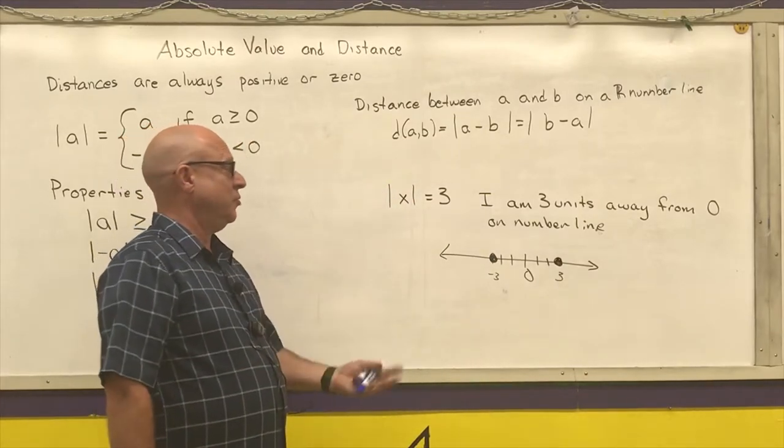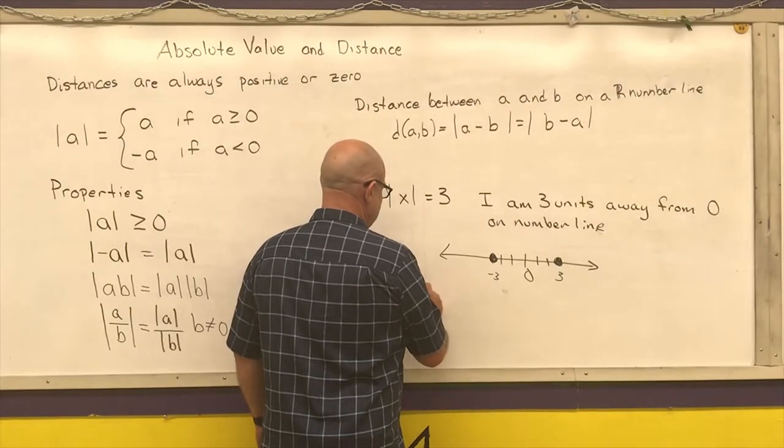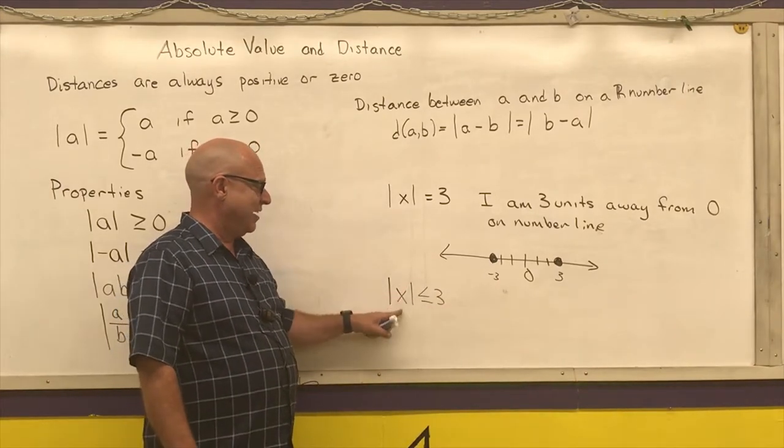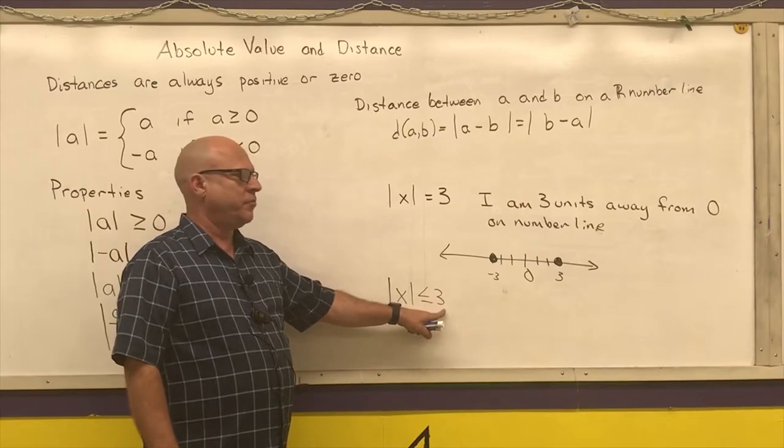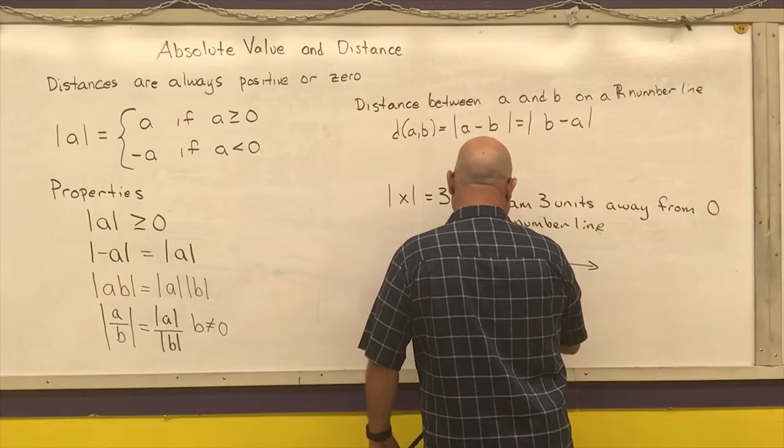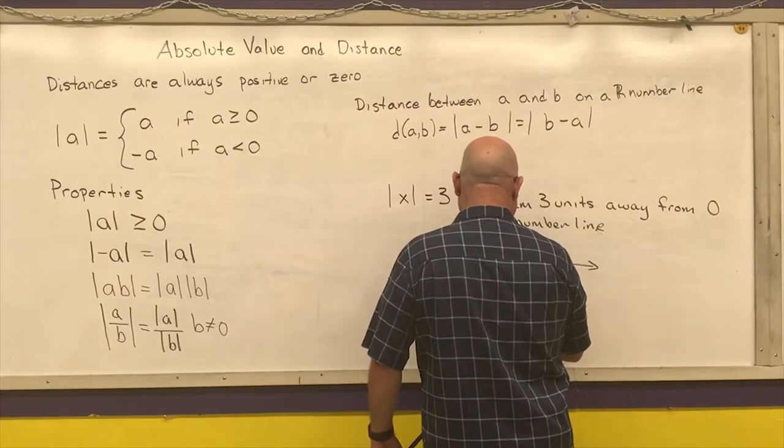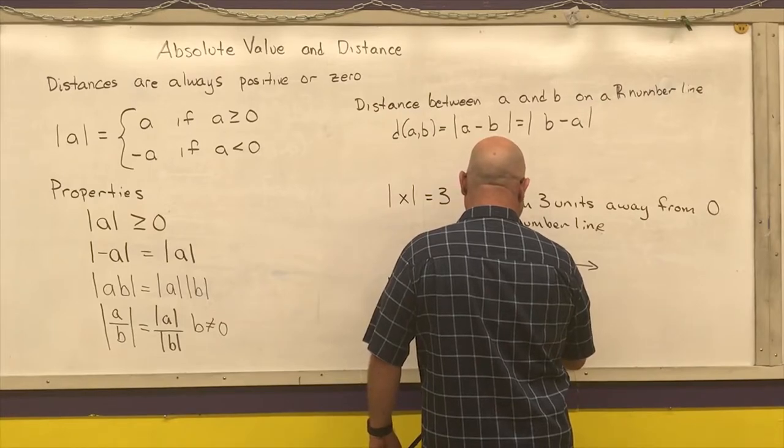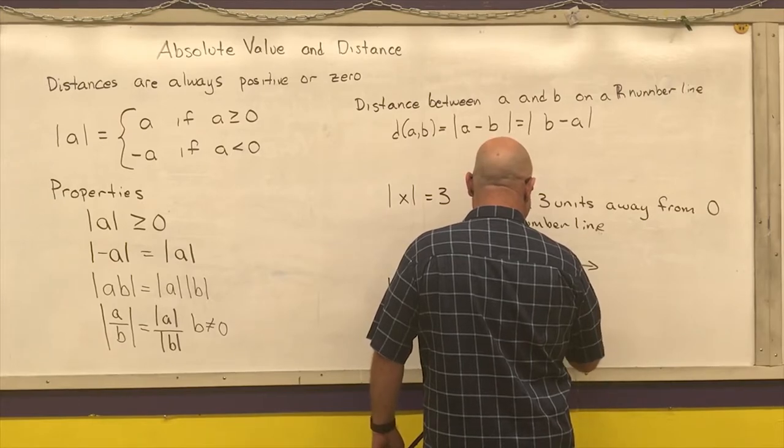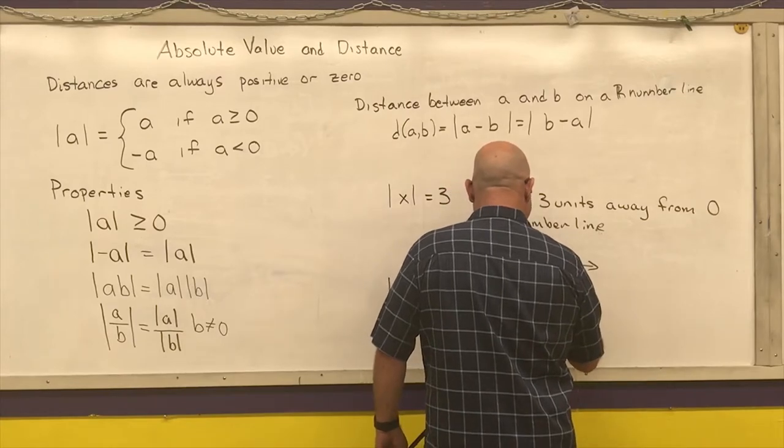Where this comes into play is when I do absolute values within inequalities. Absolute value of X is less than or equal to three, that means X is every number within three of zero on the number line. So that would be every number within three from zero on the number line. So that would be all of those numbers.